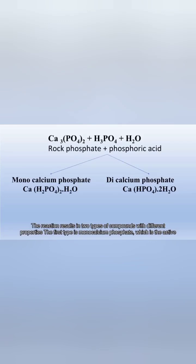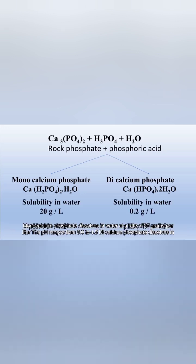The reaction results in two types of compounds with different properties. The first type is monocalcium phosphate, which is the active substance of triple superphosphate. The second type is dicalcium phosphate. Monocalcium phosphate dissolves in water at a rate of 20 grams per liter.